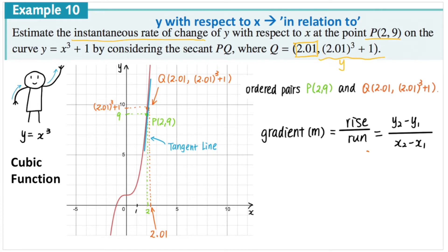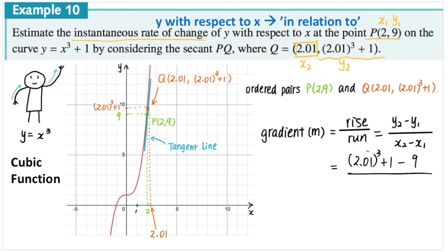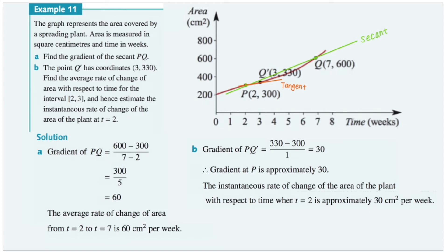Now that we know the two ordered pairs, we find the gradient using rise over run, which equals y2 minus y1 over x2 minus x1. So the gradient is (2.01 cubed plus 1 minus 9) over (2.01 minus 2). Using a calculator, we find that the gradient is equal to 12.0601.